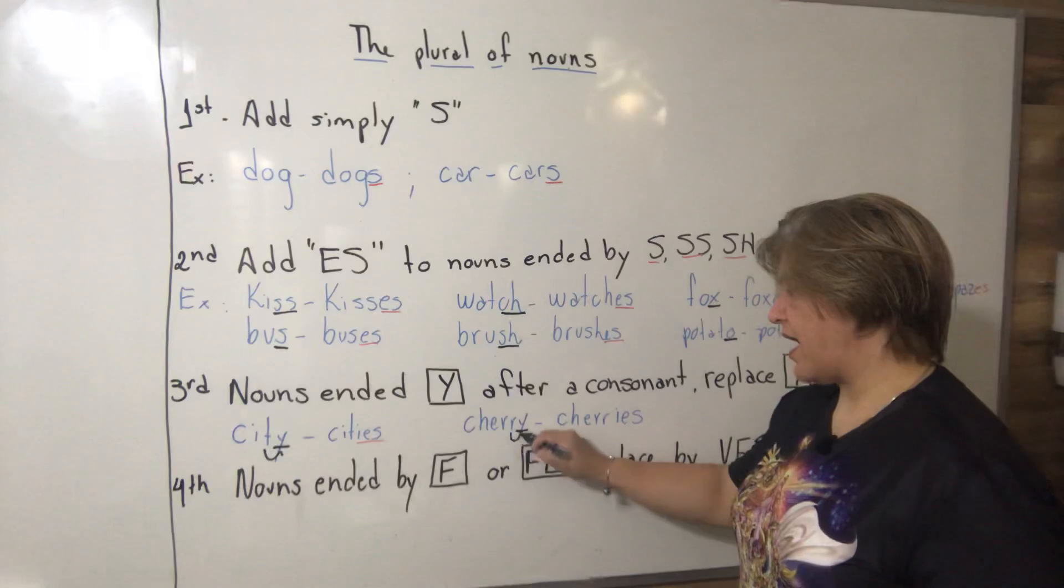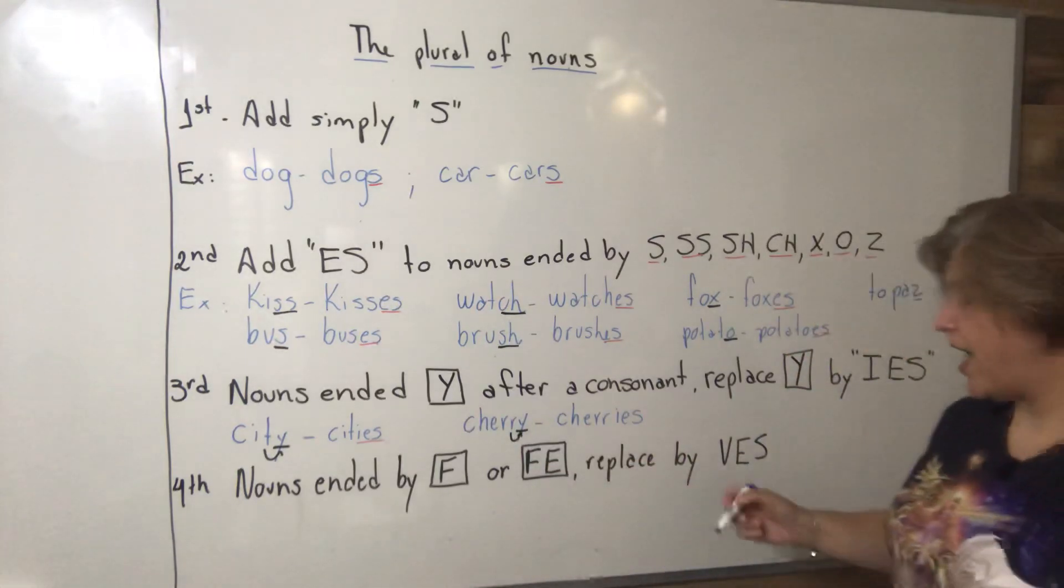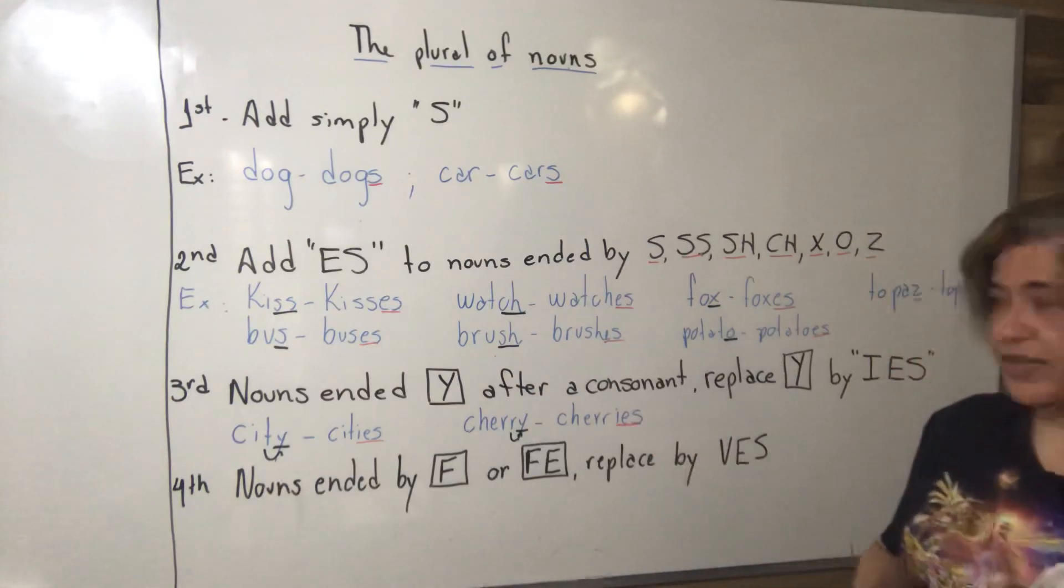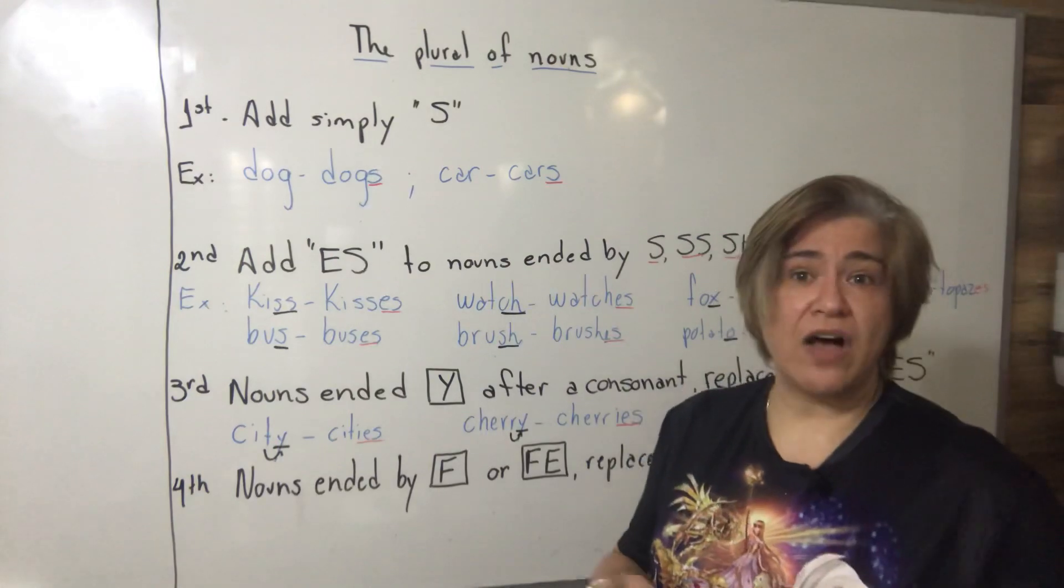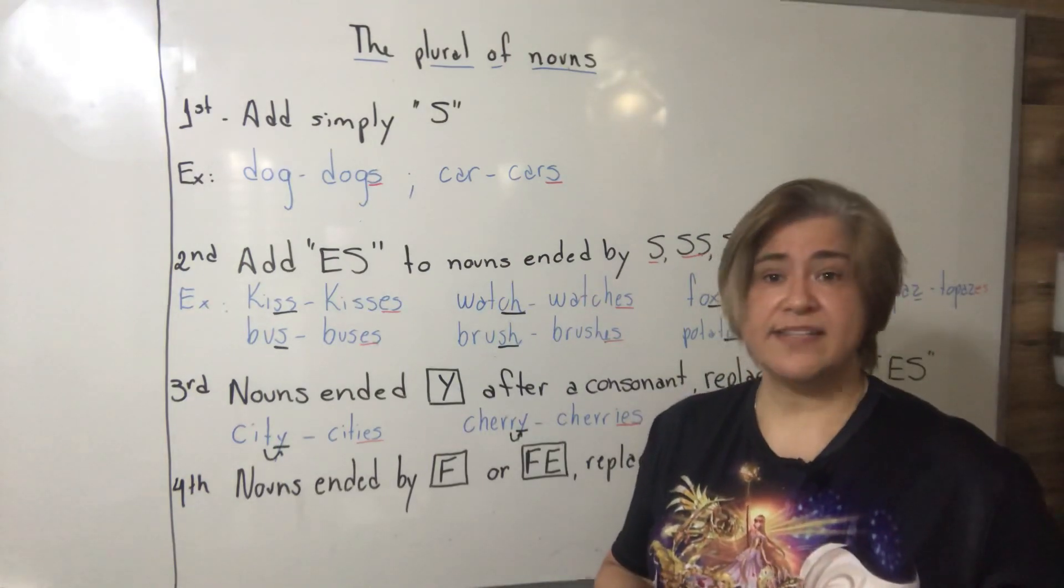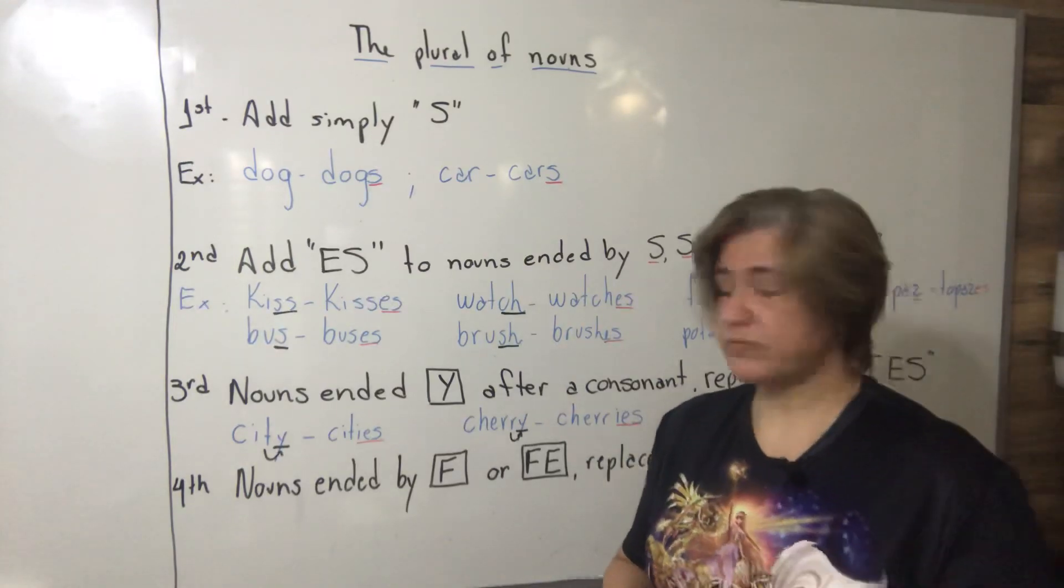If we have Y after a consonant, we replace the Y by IES. There are a lot of cities in Brazil. The city we live in is São Paulo capital. My sister wants three cherries on top of her cake.